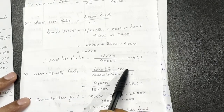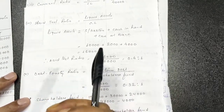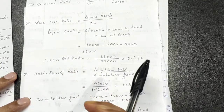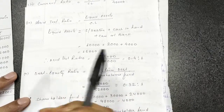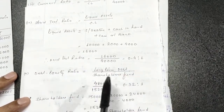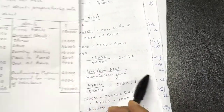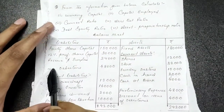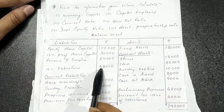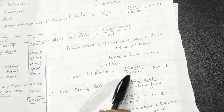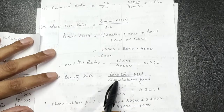Now let us move to the next important ratio: debt equity ratio. The formula is long-term debt divided by shareholders' fund. Long-term debt is basically linked to debentures, long-term loans, and long-term provisions. In this question, only one item belongs to long-term debt: 15% debentures, with an amount of 48,000.